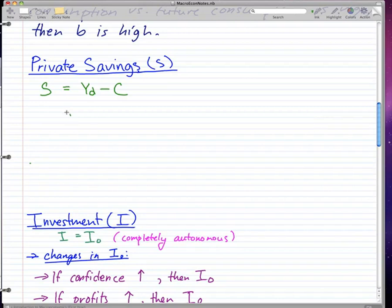We're going to talk about private savings and investment in this video. So we're going to start off with S equals Yd minus C. We already know what these variables stand for: Yd is the disposable income and C is consumption.